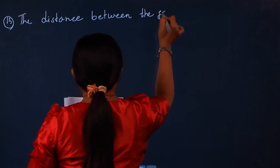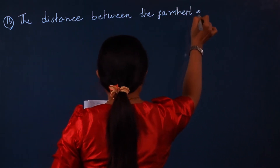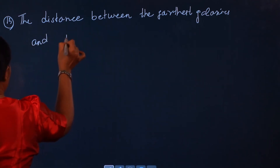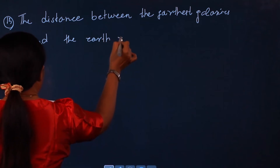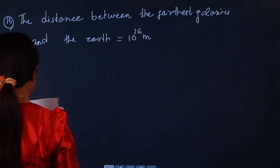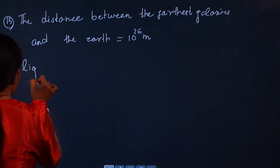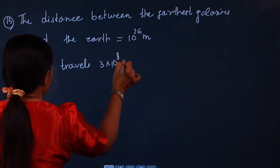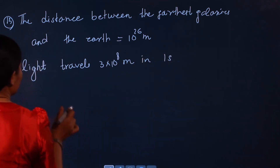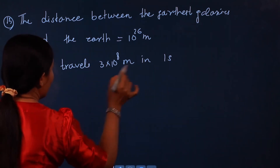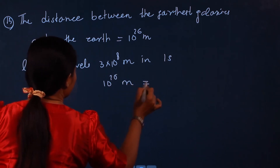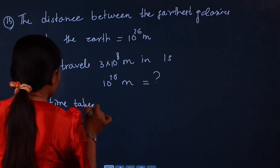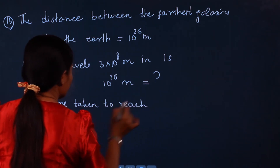The farthest galaxies — light travels 3 × 10^8 meters in one second. The farthest galaxies are at a distance of 10^26 meters. It would take an enormous time to reach those distances.